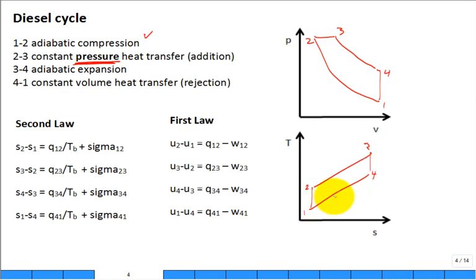So it would be like 1 to 2, out to 3, down and then 4 back. We want to be able to for each of those processes write the first and second law and then drop out those terms just like we did for the Otto cycle. So for the second law, the sigma is zero in all of these.